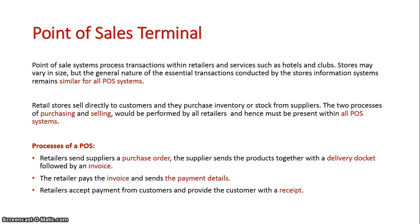Some key features of the point-of-sales terminal are that when the inventory gets below a certain point for a certain product, a purchase order is created and sent to the supplier, who then returns a delivery docket. The retailer then pays an invoice to the supplier for these products, and then sells the products to customers who receive a docket at the end of the sale.